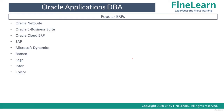Other ERP softwares in the market include Oracle NetSuite, Oracle EBS Suite, Oracle Cloud ERP, SAP, Microsoft Dynamics, Ramco, Sage, Infor, and Epicor. In this lesson, what we have learned is: what is ERP and why do companies use ERP, what are the benefits of using ERP, what is Oracle E-Business Suite, what is Oracle Applications, what are different families and what are different modules inside these families in Oracle E-Business Suite. Thank you for watching the video.